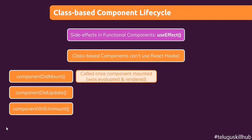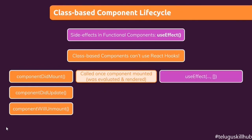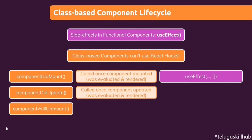So, componentDidMount executes only once — when the component is first rendered. It is called one time only. In the same way, useEffect with an empty dependency array works similarly in functional components. And the second method is componentDidUpdate, which you can use when a state value changes.